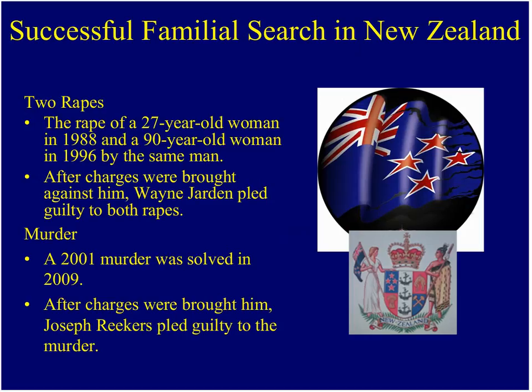New Zealand is also doing familial searching with two success stories: they caught one individual for two cold rapes from 1988 and 1996 — he pled guilty without trial. Most recently they solved a 2001 murder through a familial search. The suspect had an extensive criminal history predating the database requirement, but his sister was in the database. They got a familial hit, investigated, obtained a DNA sample via warrant, matched it to the murder, and he eventually pled guilty.